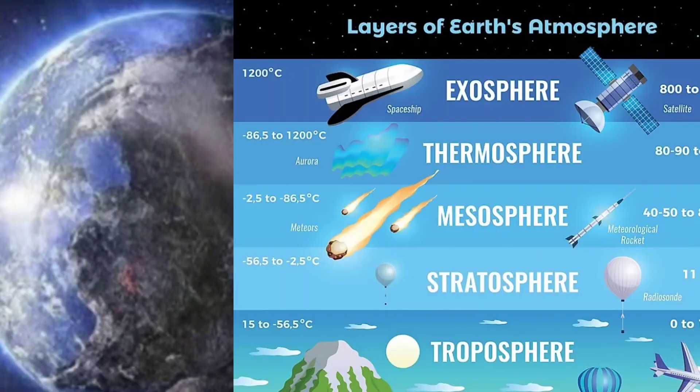The Earth's atmosphere has layers: troposphere, stratosphere, mesosphere, thermosphere, and exosphere.